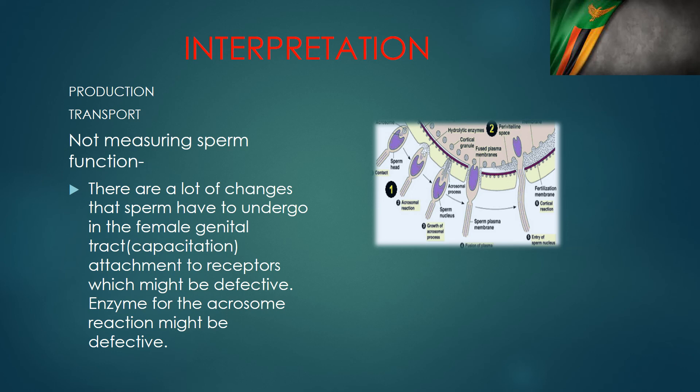A normal semen analysis does not mean that a man can fertilize a female. It tells us three things: first, that the man is producing spermatozoa; second, that he is able to have an erection; and third, that he is able to transport spermatozoa effectively from the production area to the outside world through the penis. It does not tell us anything about whether those sperm are functionally capable of fertilization.